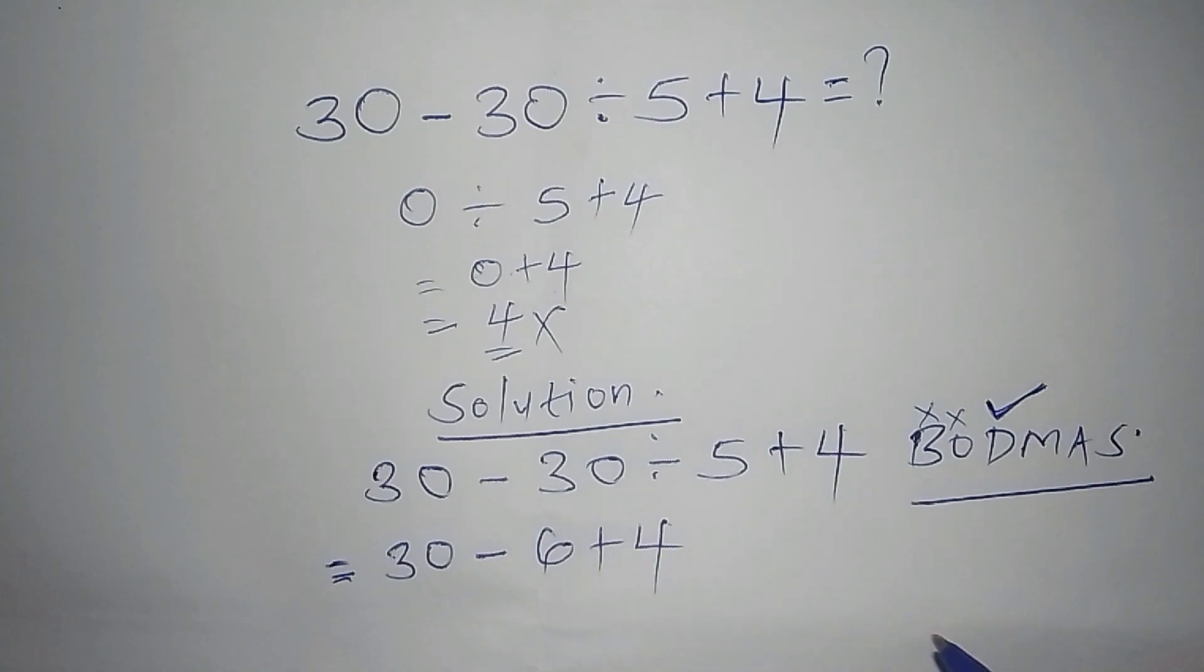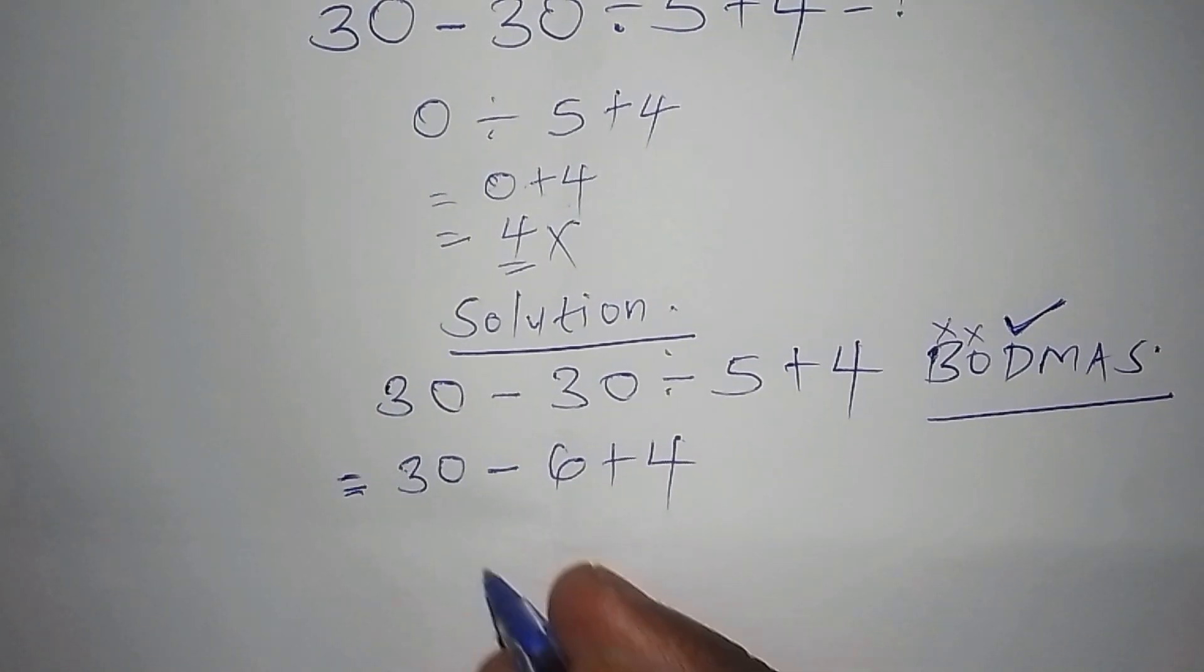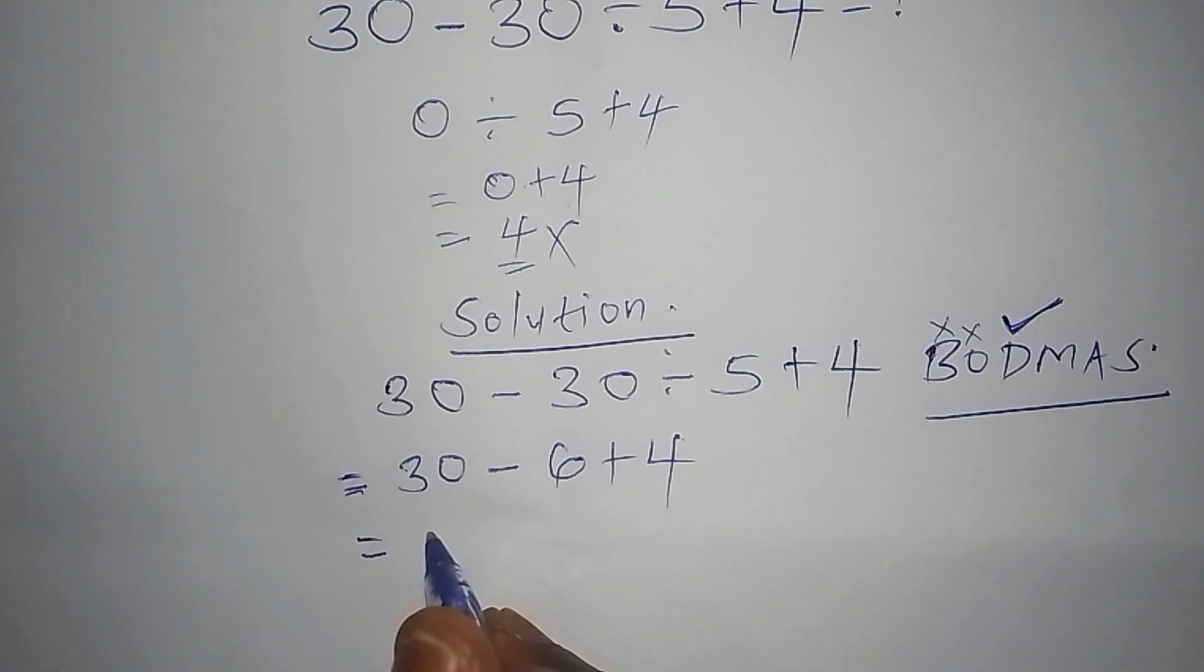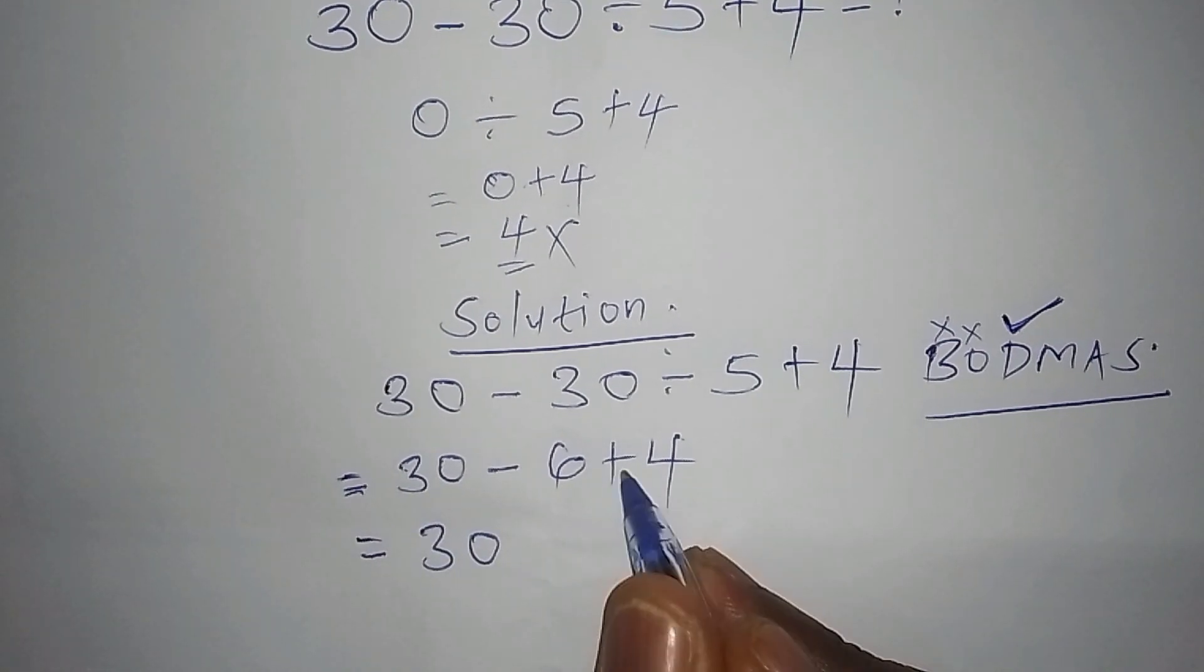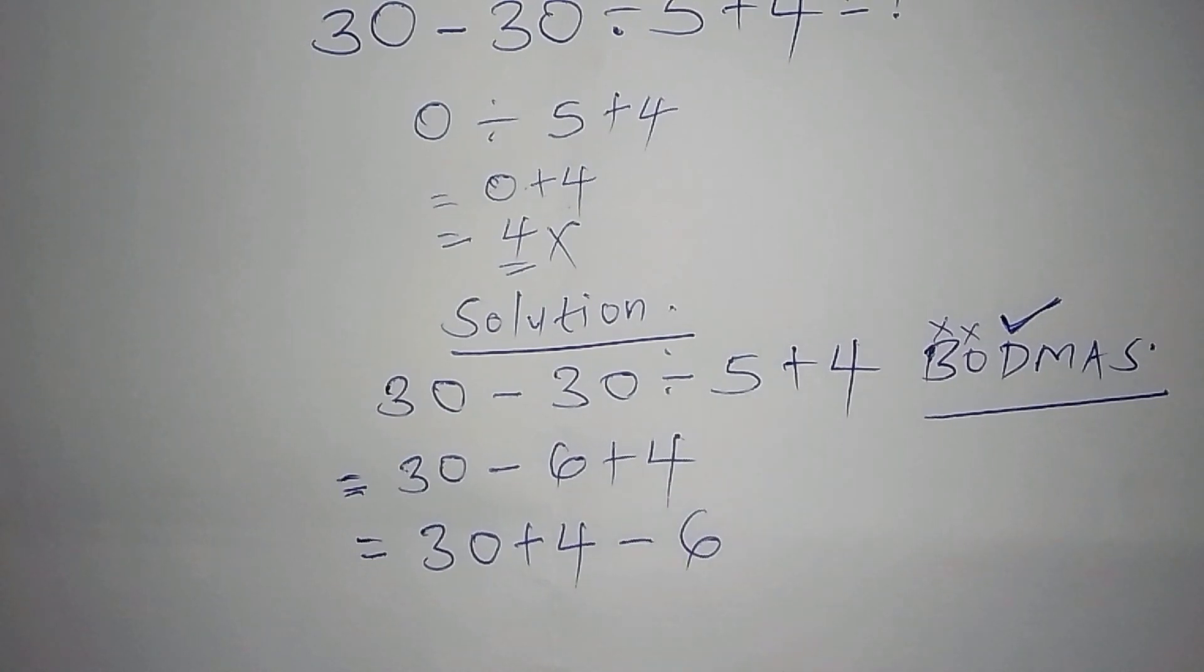So, then the next step now, for us to rearrange this problem, so when you are arranging it, this one is how it should be. So we shall say that this one equals to 30, then plus 4 here, so plus 4 minus 6.